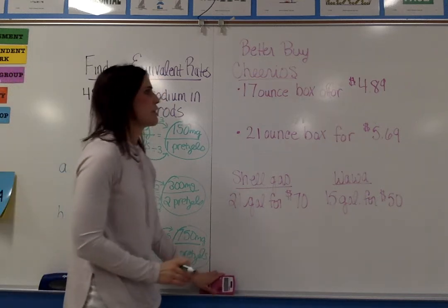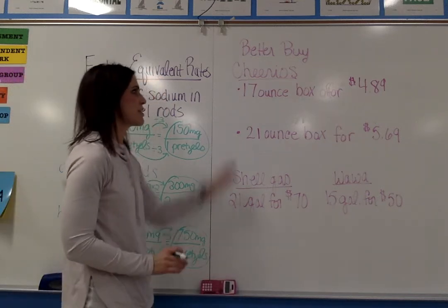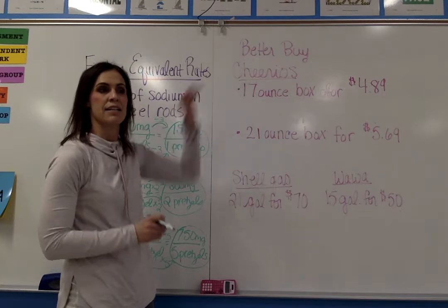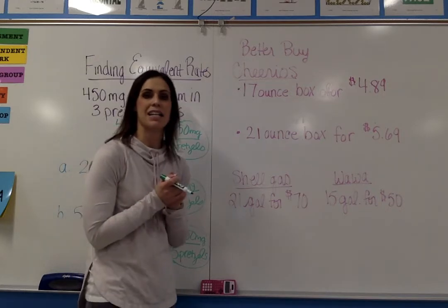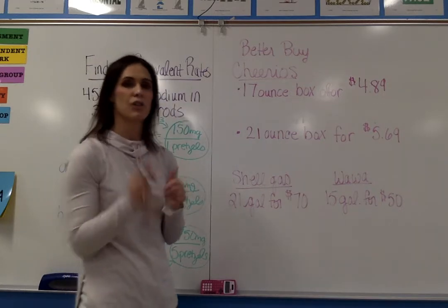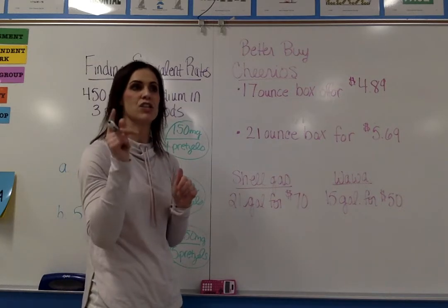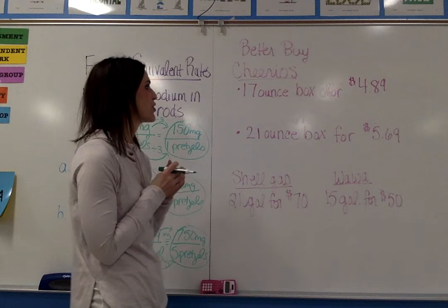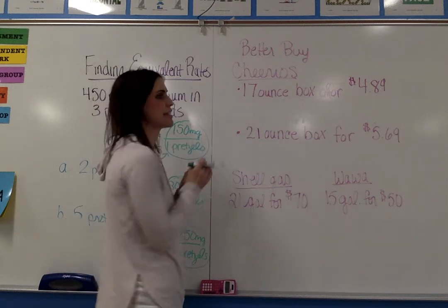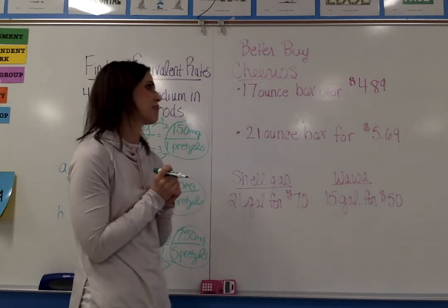Next, we're going to find unit rates to determine the better buy. A better buy is the cheaper amount for one unit — whatever unit that is. In this example, the unit is ounces.